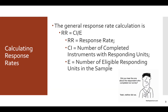So how do you go about calculating a response rate? Let me go through what each of the components are. The formula is: response rate equals the number of completed instruments divided by the number of eligible responding units in the sample. So RR equals CI divided by E.